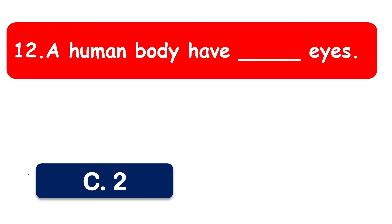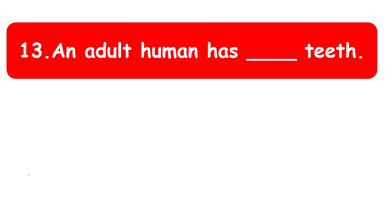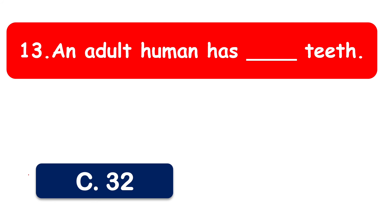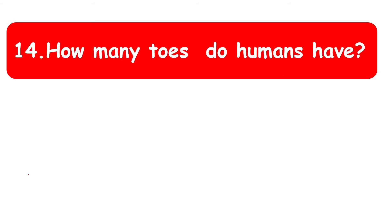An adult human has how many teeth? We are talking about an adult, not a child. The options are thirty-one, thirty-two, thirty-three, and thirty-four. An adult human has thirty-two teeth.